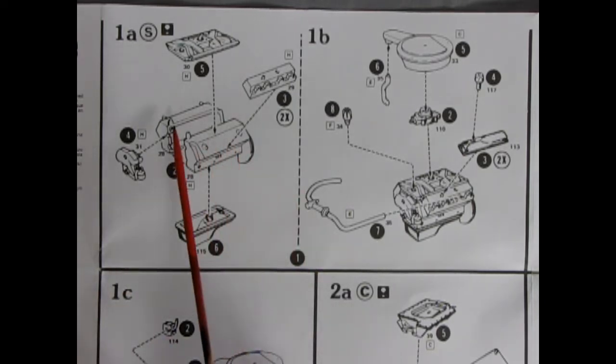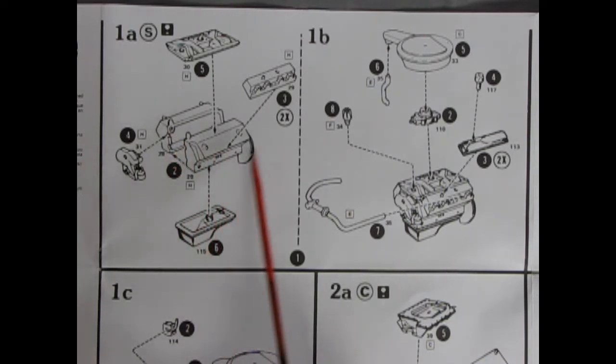So what we have here is our engine block going together left and right hand side. The transmission is separate on this one because it is shared with the other engine. We have our intake manifold, our two cylinder heads, our front timing chain cover, and the oil pan.